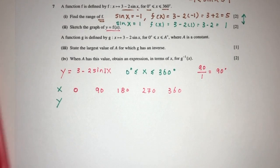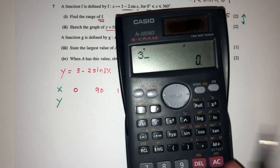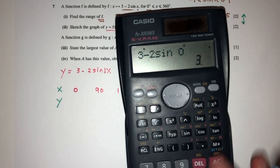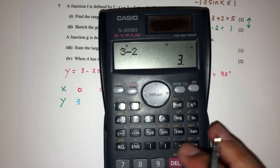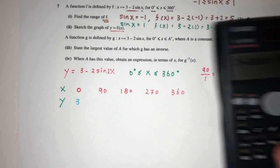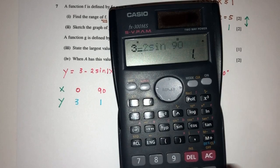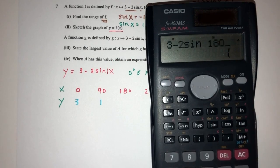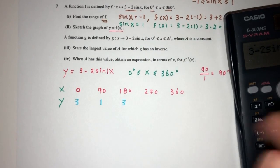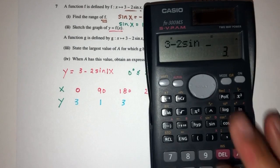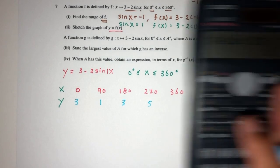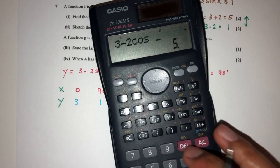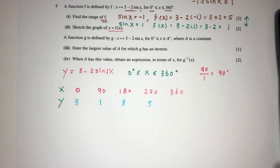Let's find the corresponding values of y. First one, 3 minus 2 sine 0, that will be 3. Then we have 3 minus 2 sine of 90, that should be 1. Then 3 minus 2 sine of 180, that should be 3. 3 minus 2 sine of 270, that should be 5. And finally 360. 3 minus 2 sine of 360, that should be 3.